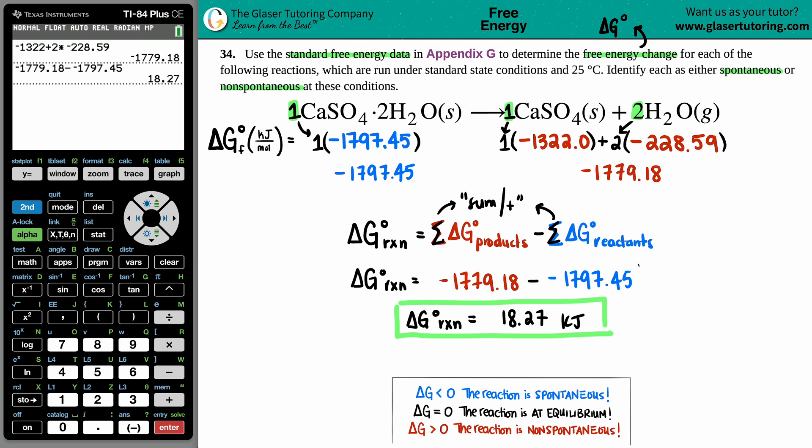Now we have to make sure we're good with sig figs. This is to the hundredths place, this one is only to the tenths place, and this is to the hundredths place. Your answer, since we're just adding and subtracting, has to be to just the tenths place because one of my numbers is to the tenths place. So 0.27 rounds up to a 3, giving us 18.3.